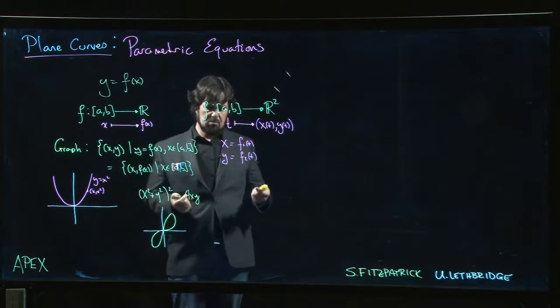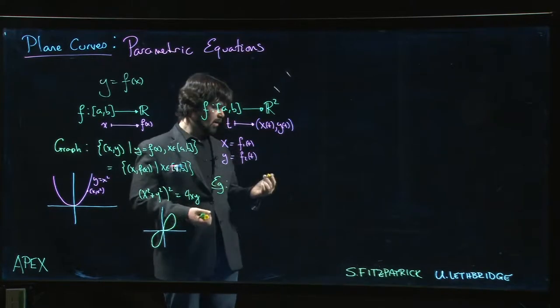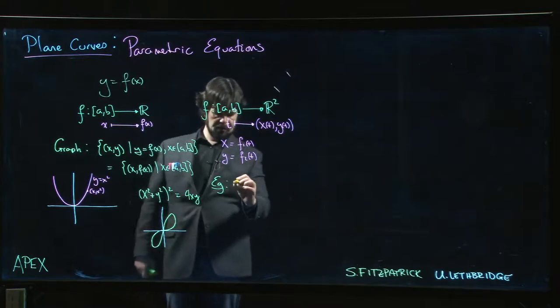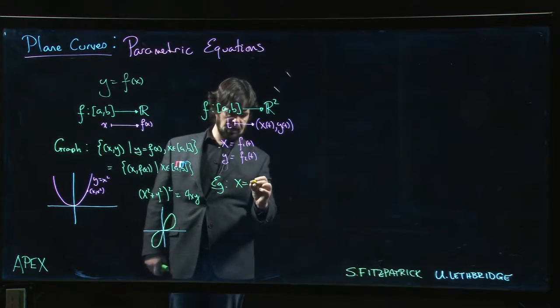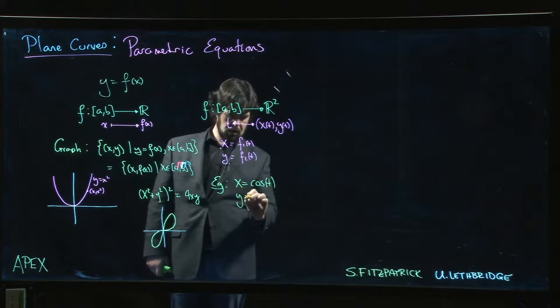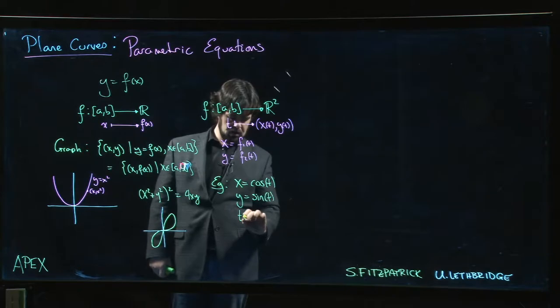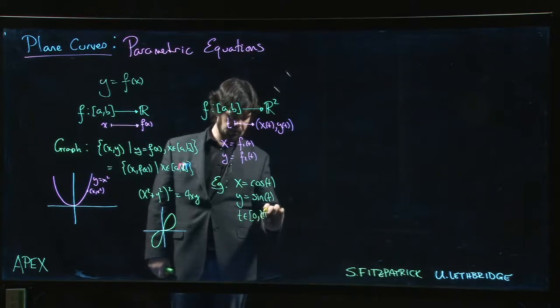Just as a quick example before we end, coming back again to the circle, we could do this: we could say, well, let's take x to be cosine of T, y to be sine of T, and take T to be, let's say, between 0 and 2π.